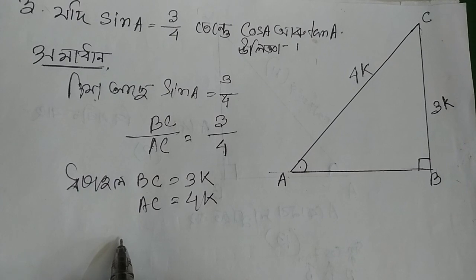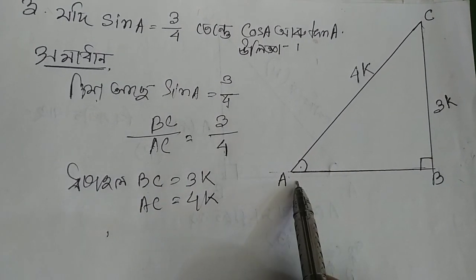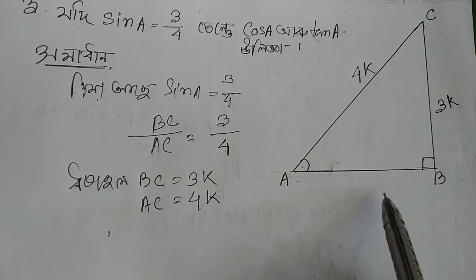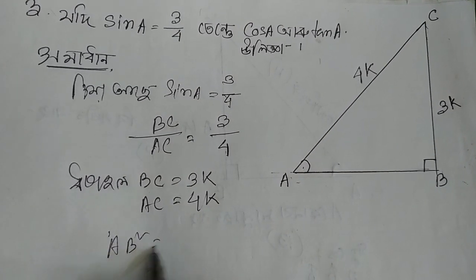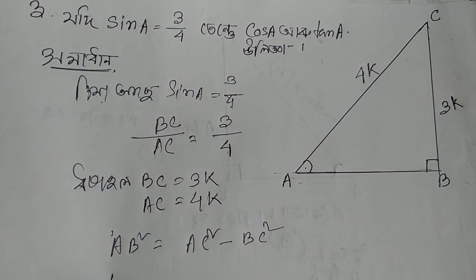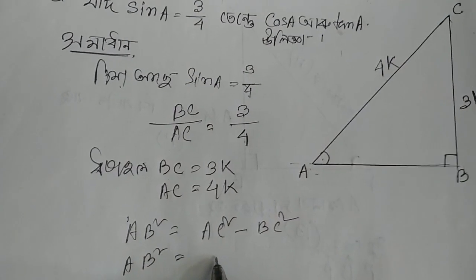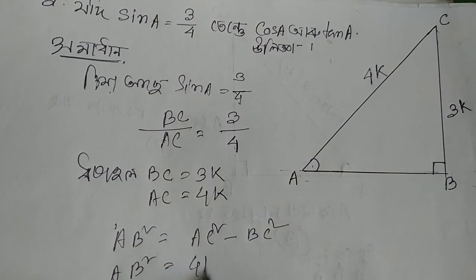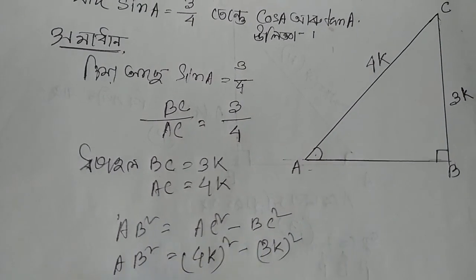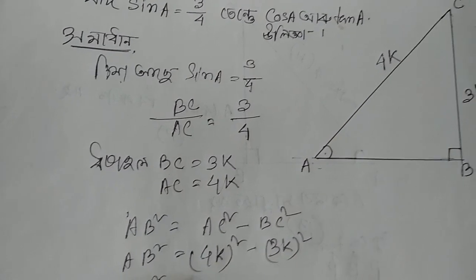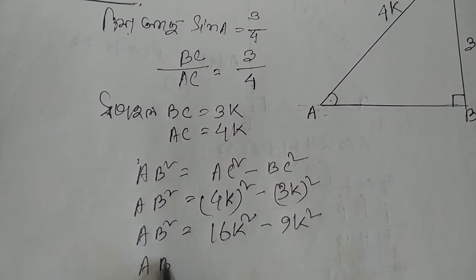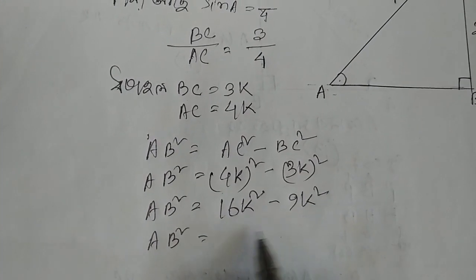We have sides BC and AB, and also AC. What we call AB square — it is equal to AC square minus BC square. So AC square is equal to 4k square, and BC square is equal to 3k square. Therefore, AB square is equal to 16k square minus 9k square.